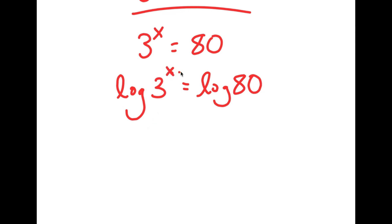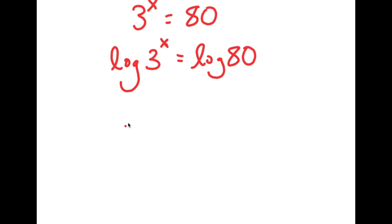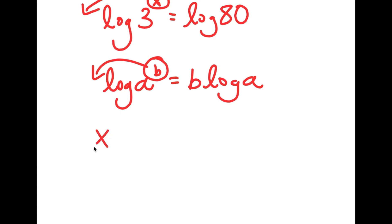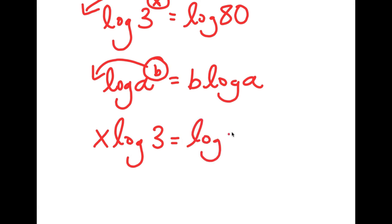We want to find the value of x, and to get x, it's hard to do it when it's in exponent form. So we want to find a way to bring x down to make it a real term. There is an important property of logarithms: if there's something in the form log a to the power of b, I can move b to the front, so this equals b times log a. So I have log 3 to the power of x, and I can move x to the front. Now I have x times log 3 is equal to log 80.